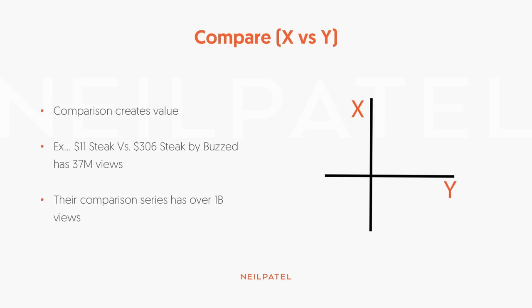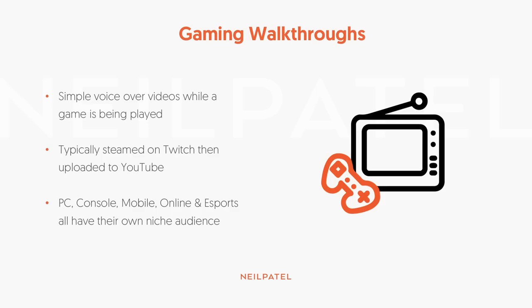There's of course comparisons. You can do this on food, workout types, fitness routines, or even software types — like what's better, MailChimp or ConvertKit. There are so many different types of comparisons that you can do; it creates value, and you can also generate affiliate revenue from those as well. Gaming walkthroughs — simple voiceovers as you're playing. You can also do these on Twitch and then upload them on YouTube. All you really need is a PC or a console and you just start recording and you're off to the races.